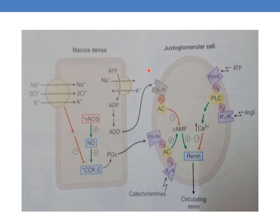Increased sodium transport in the macula densa also augments the efflux of ATP. This ATP may inhibit renin release by directly binding to P2Y receptors and activating the Gq/PLC/IP3-calcium pathway in juxtaglomerular cells. Additionally, circulating angiotensin 2 also inhibits renin release via Gq-coupled AT1 receptors.